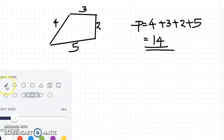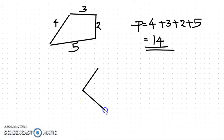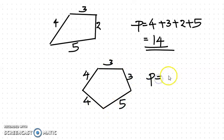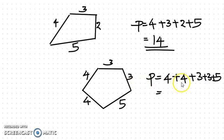Now let's look at another shape. For this object, these two sides are 4, two sides are 3, and one side is 5. So the perimeter is found by adding all 5 sides: 4 plus 4 plus 3 plus 3 plus 5. That is 8 plus 6 plus 5, giving a perimeter of 19. By adding all sides, we can find the perimeter.